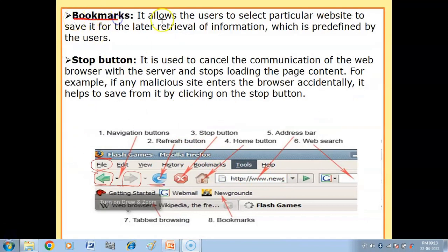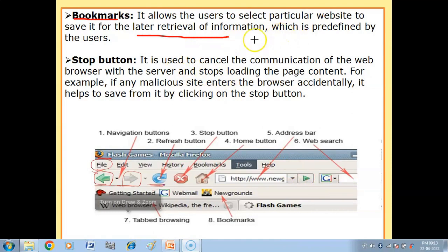Then we have the Bookmark feature. It allows the user to select a particular website and save it for later retrieval of information. When you find a good website and want to use it later, you can bookmark it — click on the website, click bookmark. That means you can use that website later on. You save the URL, you save the address of the website you want.